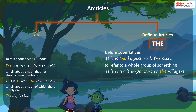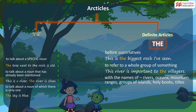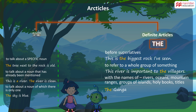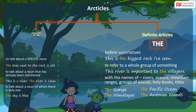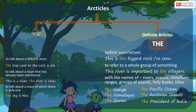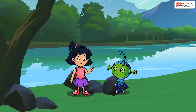Last but not the least, we use THE with the names of rivers, oceans, mountain ranges, groups of islands, holy books, and titles. For example, the Ganga, the Pacific Ocean, the Himalayas, the Andaman Islands, the Quran, the President of India.